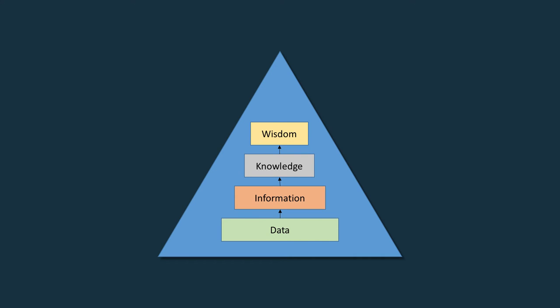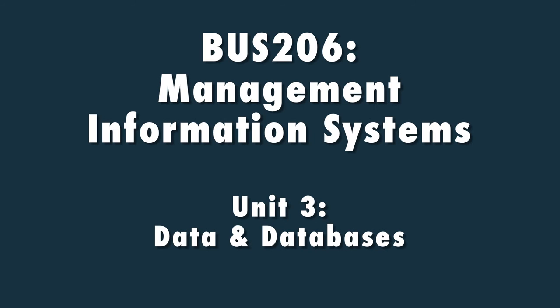This unit begins with a couple of videos about the D.I.K.W. pyramid and the difference between data, information, knowledge, and wisdom. You will learn how each differs and builds upon one another. Some of the key concepts to watch for in Unit 3 are how you can use data to drive your decisions and the key role information technology plays in knowledge management.